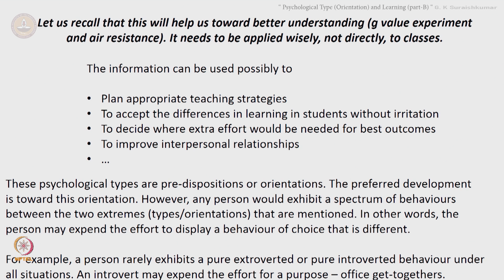What naturally comes to a person is one thing, whereas if he or she puts in the effort, they can display another behavior altogether — a different shade of that behavior. For example, a person rarely exhibits a pure extroverted or a pure introverted behavior under all situations. An introvert may expend the effort for a particular purpose — suppose a person wants to interact better with colleagues and goes to an office get-together, making an effort to display extroverted behavior even though it is not natural.